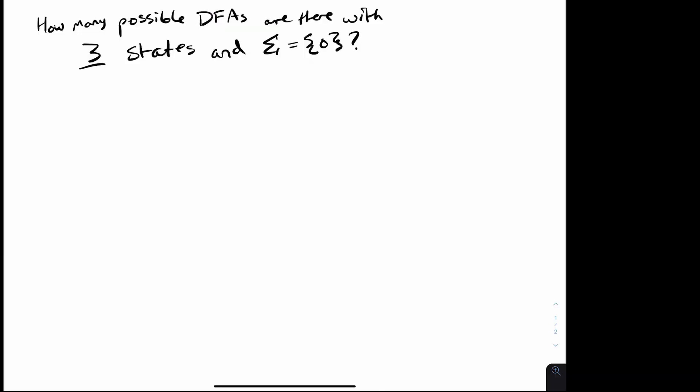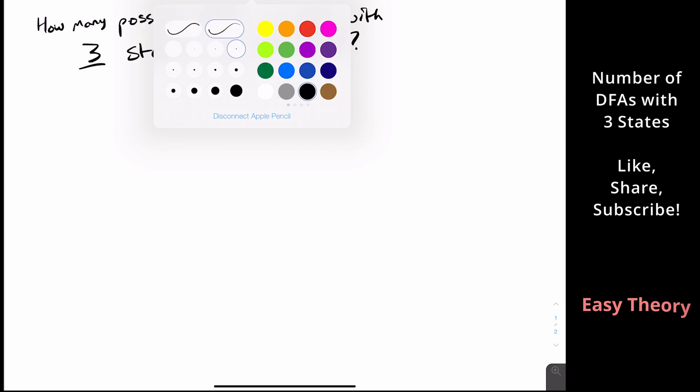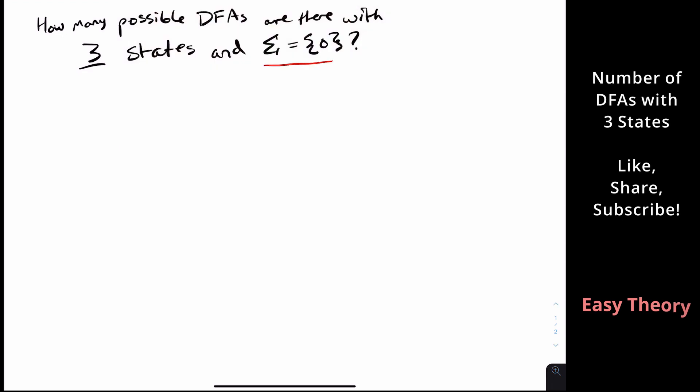Hello and welcome back to another edition of Easy Theory. Today we're going to be looking at this question: how many possible DFAs are there with three states and a unary alphabet? By unary alphabet, we mean that there's a single character in the alphabet, in this case zero.